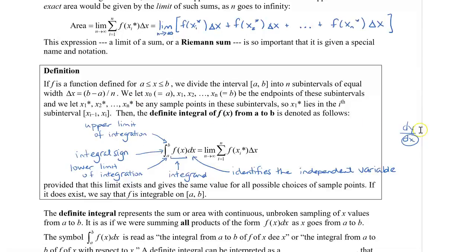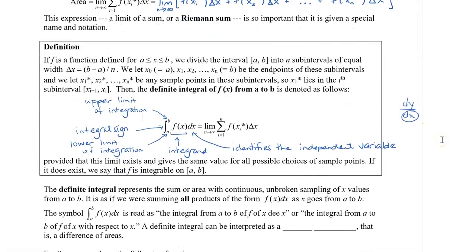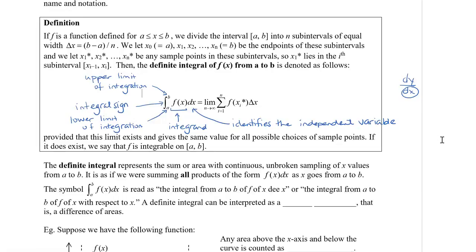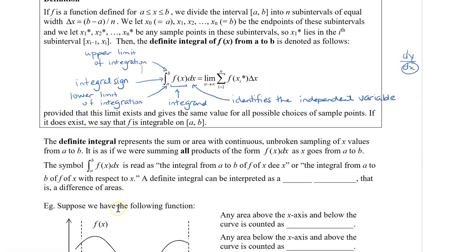So the definite integral, it represents the sum or area with continuous unbroken sampling of x values from a to b. It is as if we were summing all the products of the form f of x times d of x as x goes from a to b. So what we're doing is we're adding up all of these little rectangles. But what we're going to do is actually now use the symbol, the integral of, actually here. So it's read as the integral from a to b of f of x dx. Or you can say the integral from a to b of f of x with respect to x. So the definite integral can be interpreted as a net area. That is a difference of areas. All right.